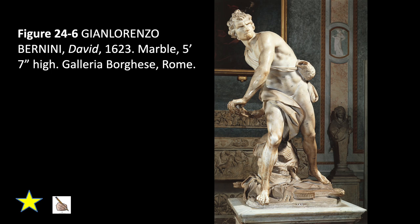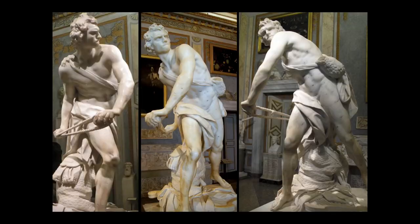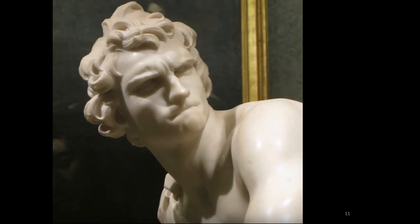Looking closer at Bernini's David, Bernini chose to represent the combat itself and aimed to capture the split second of maximum action. The body armor at David's feet is the protection King Saul offered him, but that David rejected because he placed his faith in the Lord. A bag full of stones is at David's left hip, suggesting that he thought the fight would be tough and long. The Baroque statue seems to be moving through time and through space, and the tension in David's face augments the dramatic impact of Bernini's sculpture.